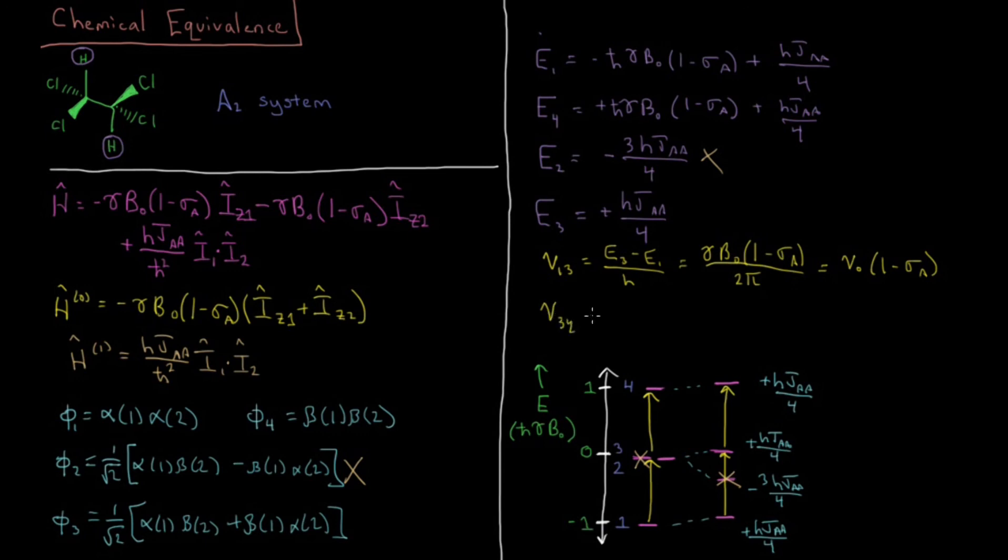And similarly for 3,4, as I said, when we verbally went through that E4 minus E3 over H, that also works out to the same value. It's going to be gamma B naught times 1 minus shielding constant sigma A over 2 pi. And then again, the formula which connects B naught and nu naught, the magnetic field of absorption and the spectrometer frequency is going to be nu naught times 1 minus sigma A.